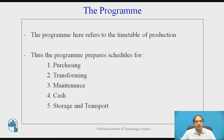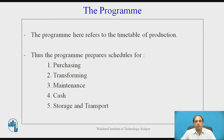The next P in the series is the program. The program is the production schedule — when to produce, how much to produce, in what quantity, when to purchase, and all those things come into the picture when you talk about programming. It is the manufacturing or operational program. Programming may involve various parameters before you decide a schedule: the purchasing policy, the transformation or conversion processes, critical maintenance functions, cash flow management of the company, and the storage and transport facilities available.